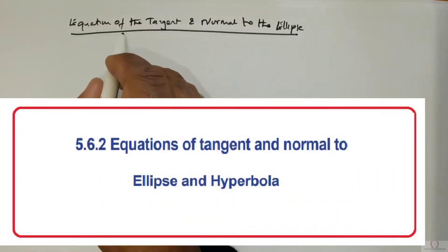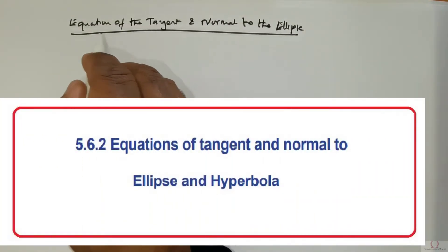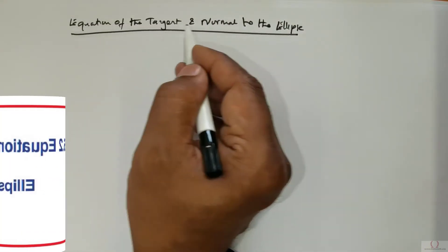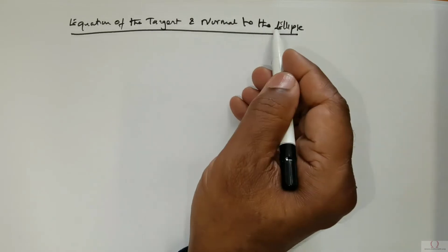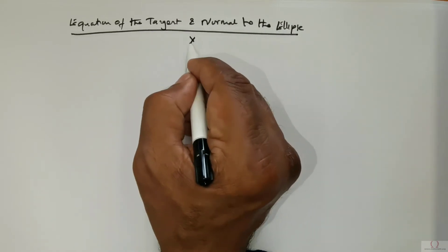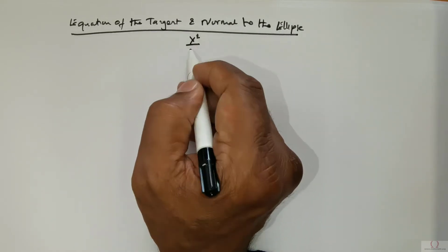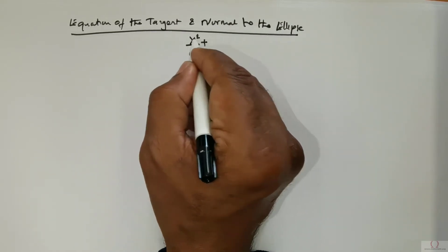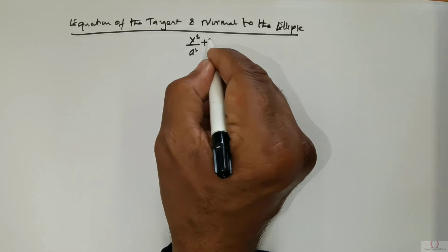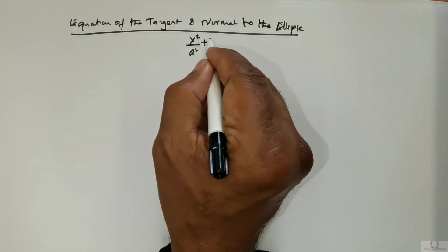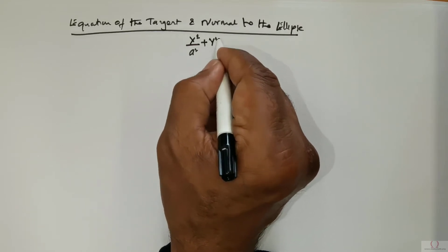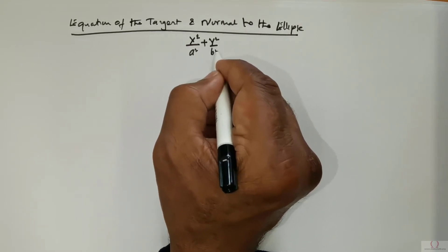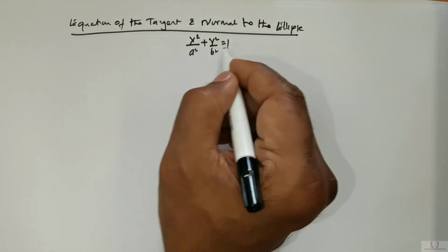Students, in this class we will study about the equation of the tangent and normal to the ellipse, with the form of the ellipse being x squared over a squared, positive y squared over b squared is equal to 1.